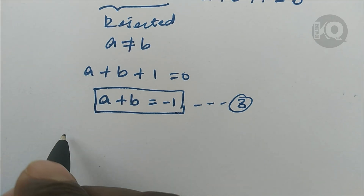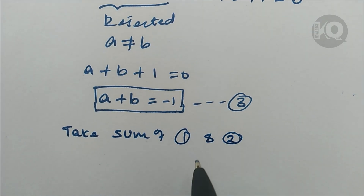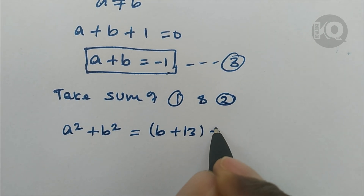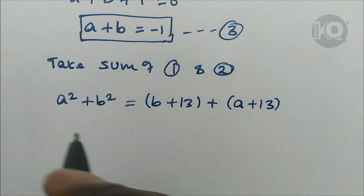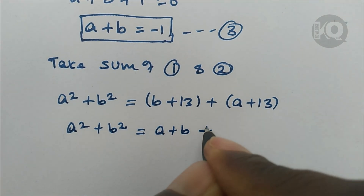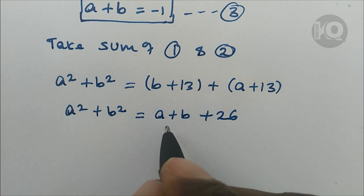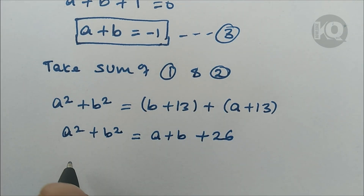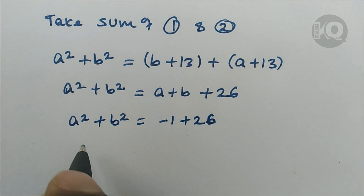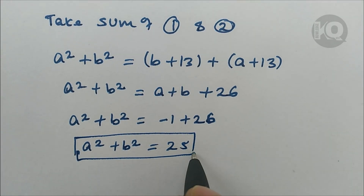Now let's take the sum of equation one and equation two. So a squared plus b squared equals b plus 13 plus a plus 13, which simplifies to a squared plus b squared equals a plus b plus 26. Substituting equation three, a plus b equals minus 1, we get a squared plus b squared equals minus 1 plus 26 equals 25. Call this equation four.